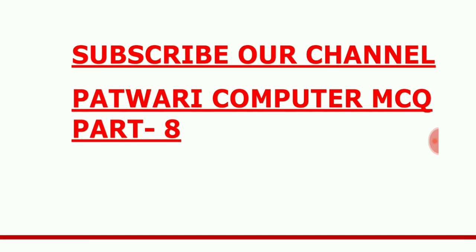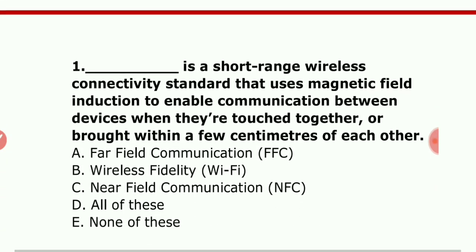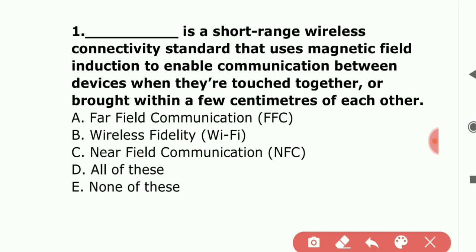Today we are doing computer MCQs where one statement is given along with options. The first question of today's session: 'Dash is a short-range wireless connectivity standard that uses magnetic field induction to enable communication between devices when they are touched together or within a few centimeters of each other.'